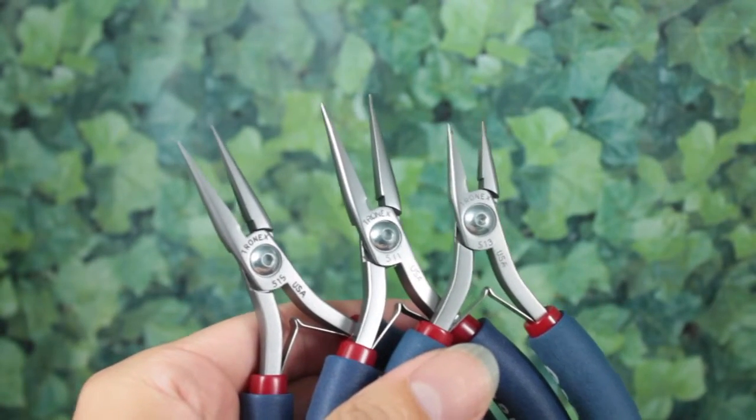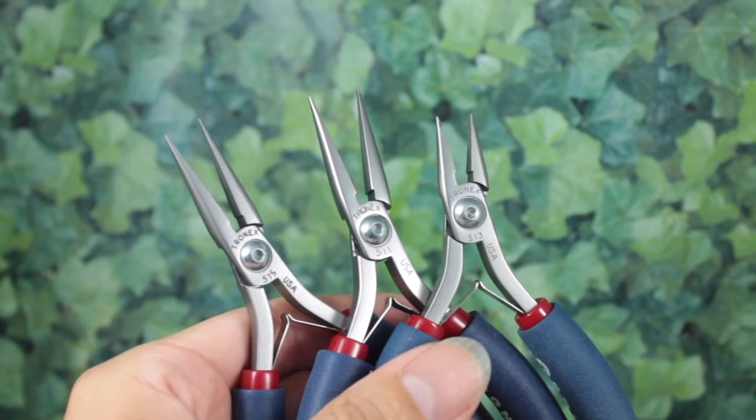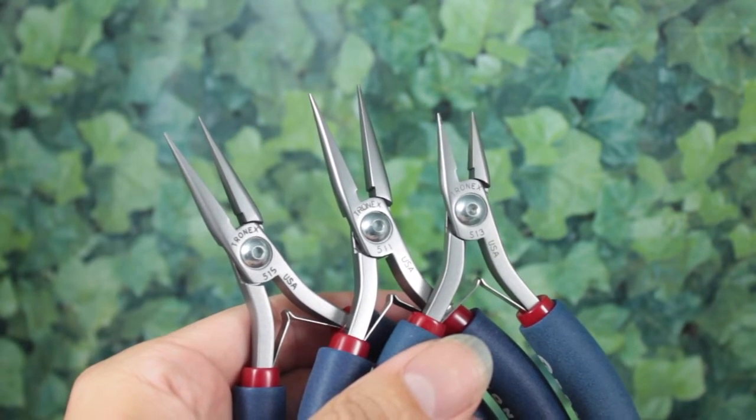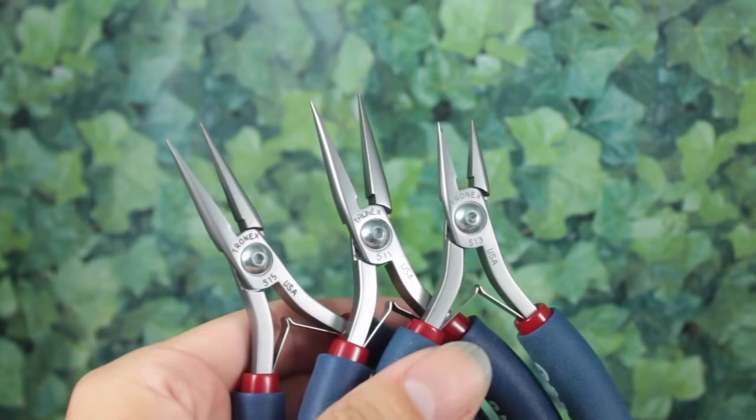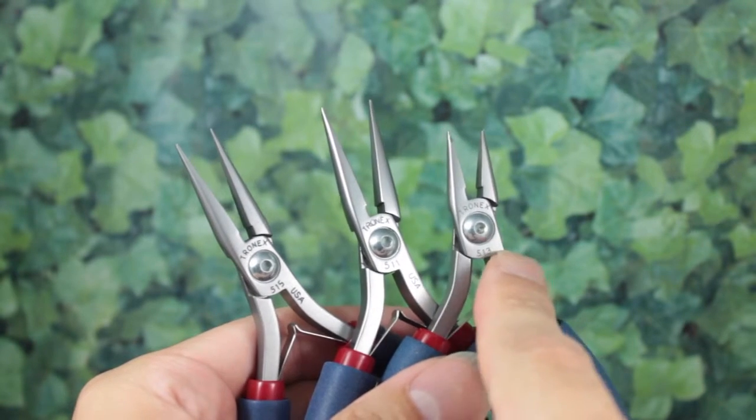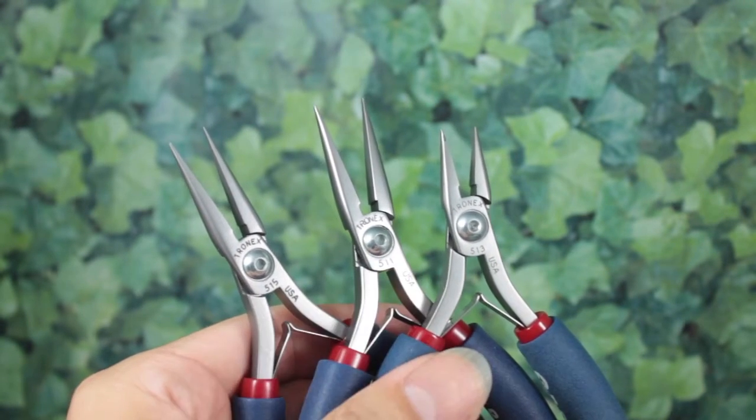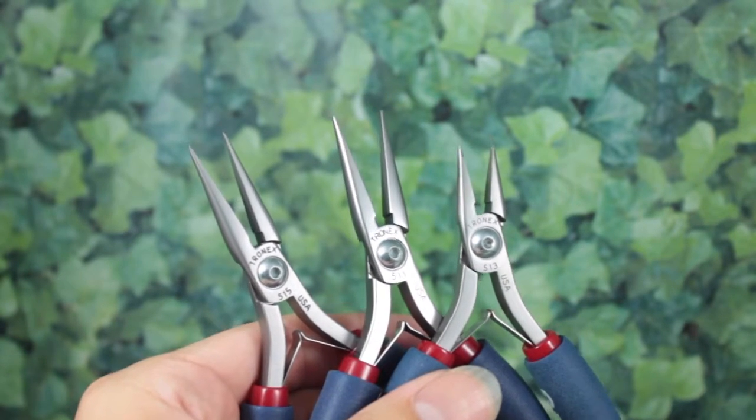So due to the versatility, the chain nose pliers are probably the most essential and useful piece of kit that you're going to have in your toolbox. They're absolutely great for a thousand and one purposes. So whether you go with the short jaws, the long jaws, or the brand new extra fine long tapered jaws.